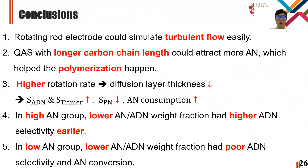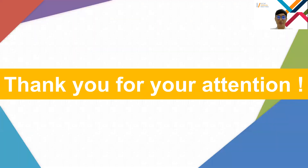To sum up, these were my conclusions. First, the rotating rod electrode could simulate turbulent flow. Second, QAS with longer carbon chain length could attract more AN, which helps polymerization. Third, with higher rotation rates, the diffusion layer thickness decreases, and the selectivity of ADN and trimer increases while PN selectivity decreases and AN consumption increases. Fourth, in the high AN group, low AN-ADN weight fraction had higher ADN selectivity earlier. Last, in the low AN group, lower AN-ADN weight fraction had poor ADN selectivity and AN conversion. This is my presentation. Thank you for your time and attention. If you have any questions, please don't hesitate to ask.